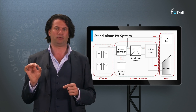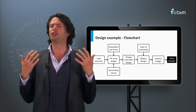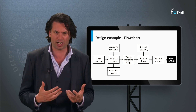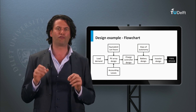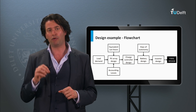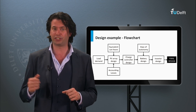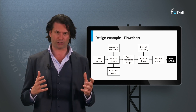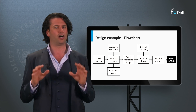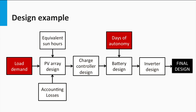I will introduce you to a simple flowchart that helps to design an off-grid PV system. We will walk through all the stages of this flowchart while considering an example. Let us first define the load demand that has to be powered with an off-grid PV system. The total days of autonomy required should also be specified.